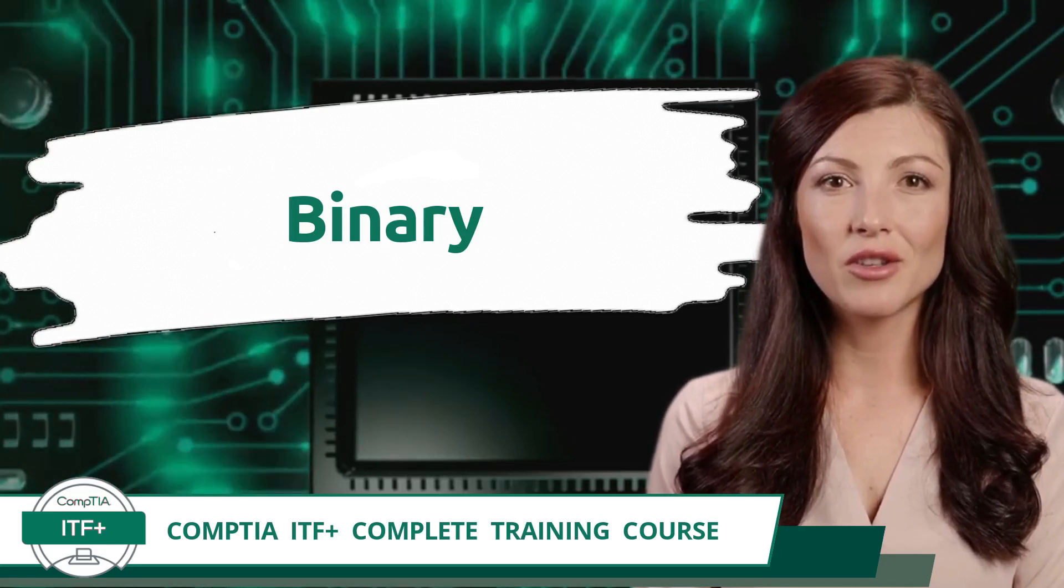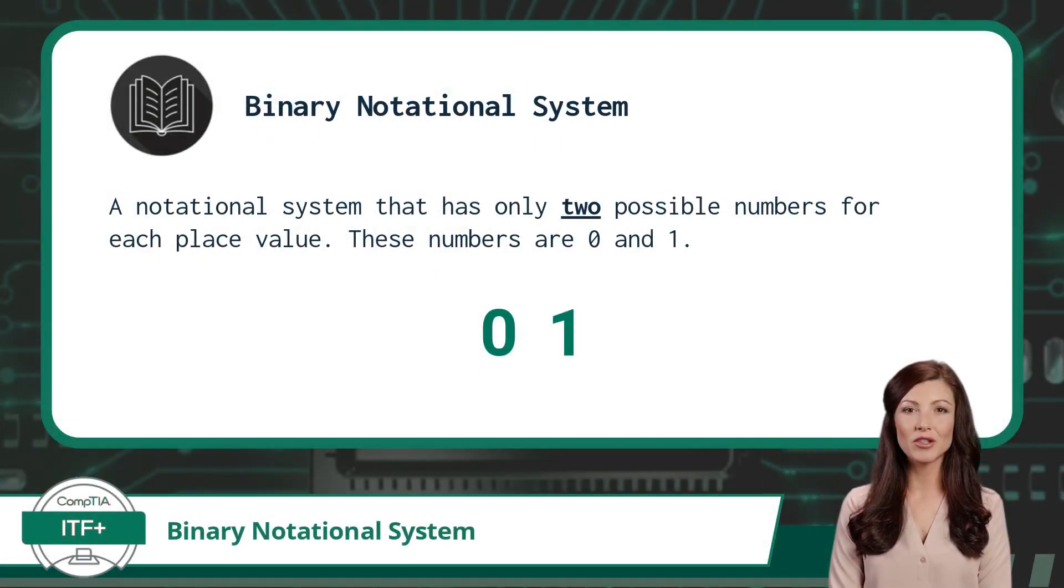Binary notational system. The binary notational system has only two possible numbers for each place value. These numbers are 0 and 1.